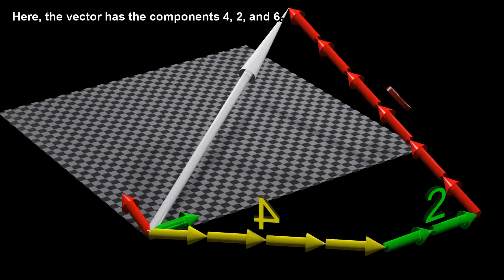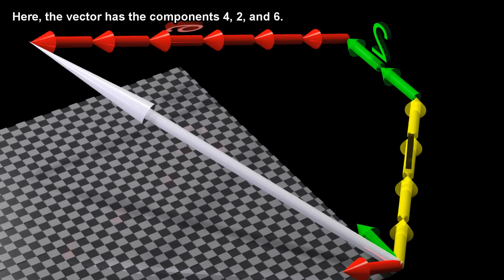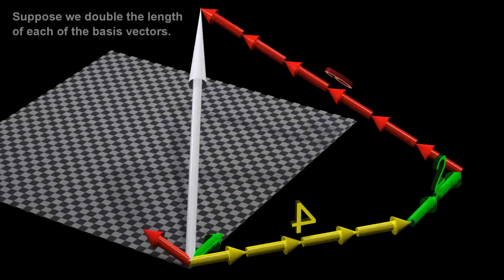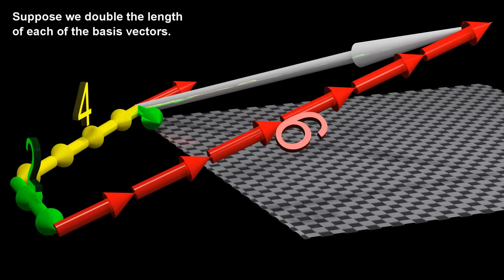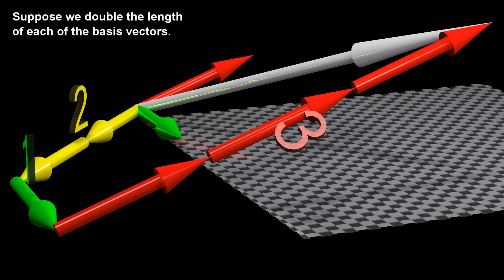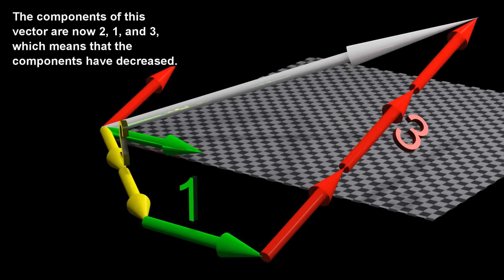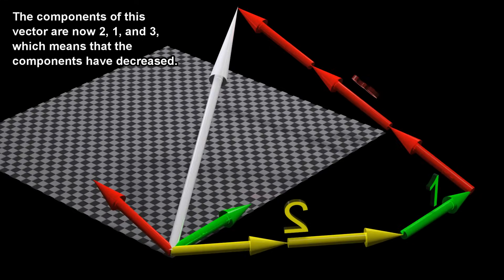Here, the vector has the components 4, 2, and 6. Suppose we double the length of each of the basis vectors. The components of this vector are now 2, 1, and 3, which means that the components have decreased.